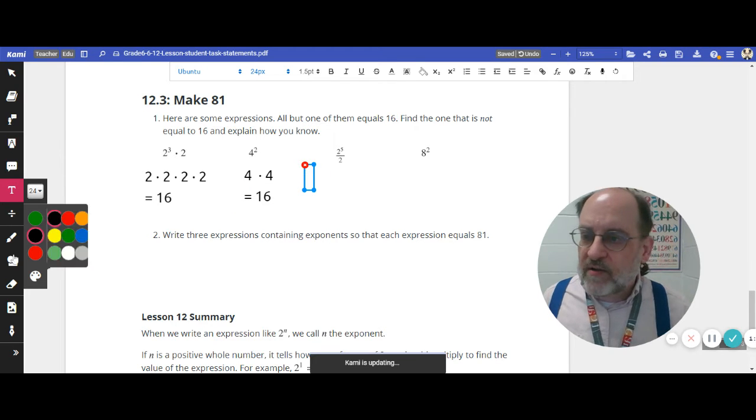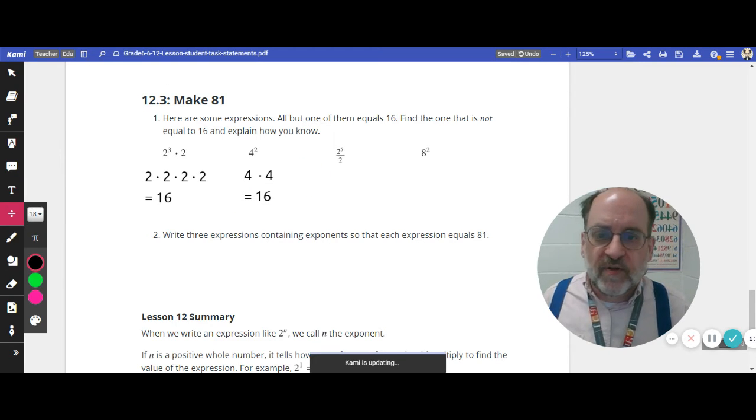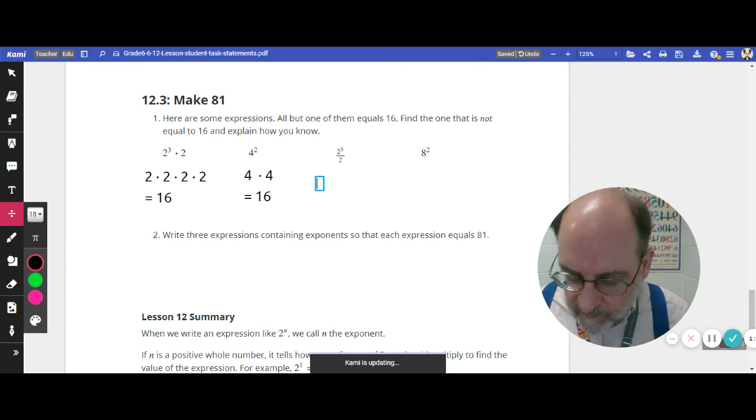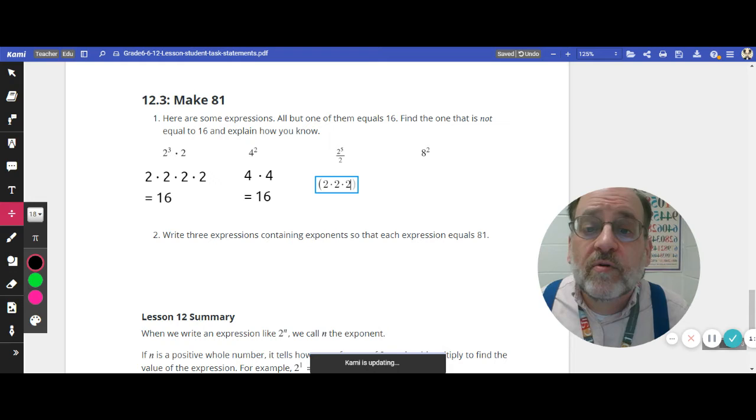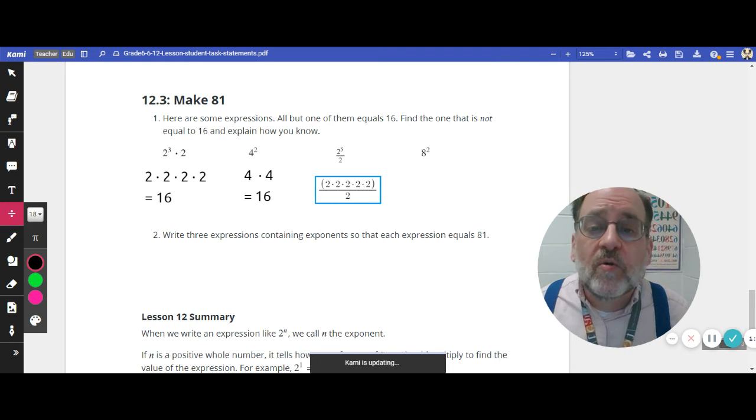What have we got here? I'm going to use my equation tool. And we're going to write parentheses 2 times 2 times 2 times 2, times 2 times 2. 5 of these. Divide that by 2.